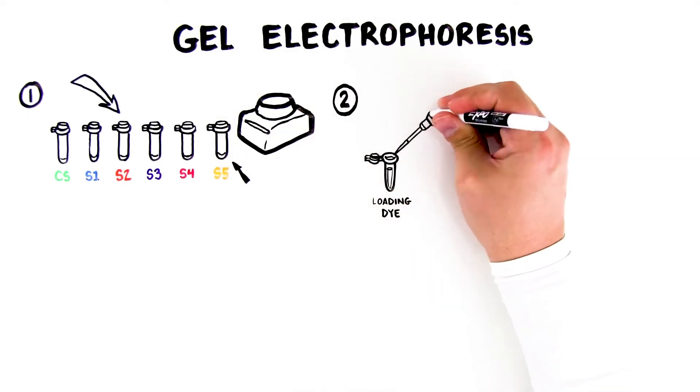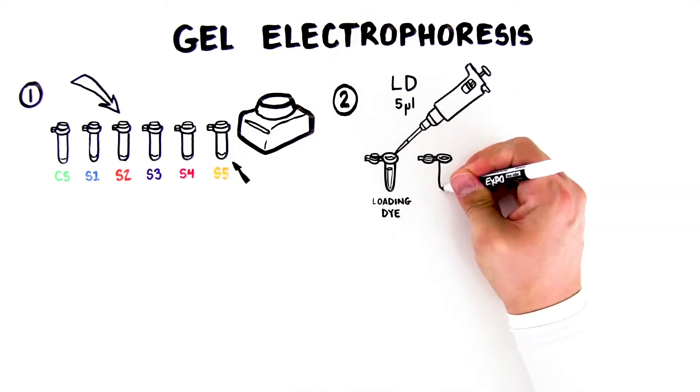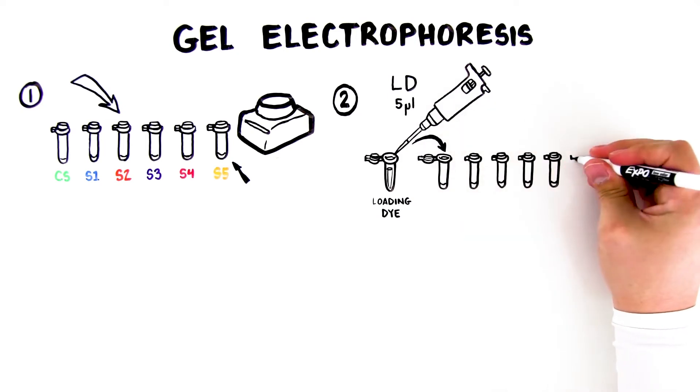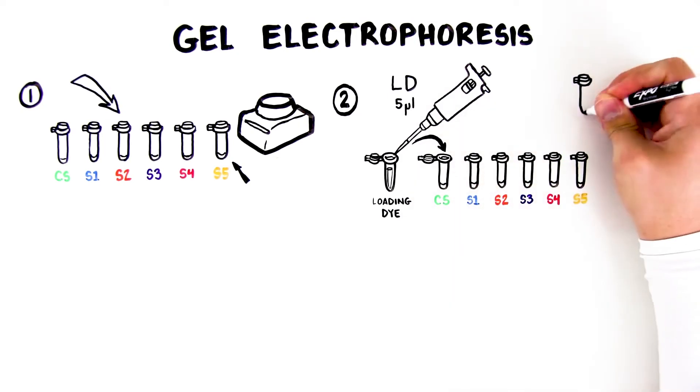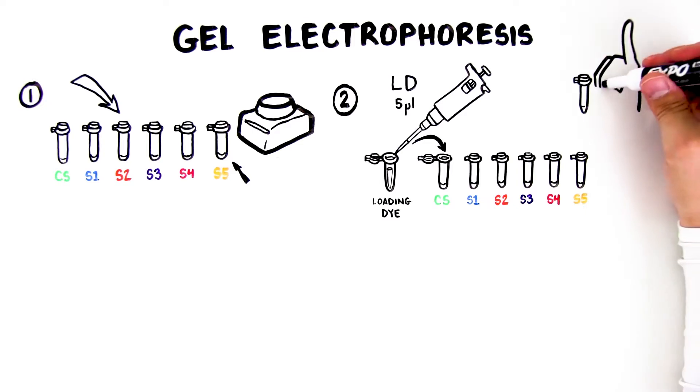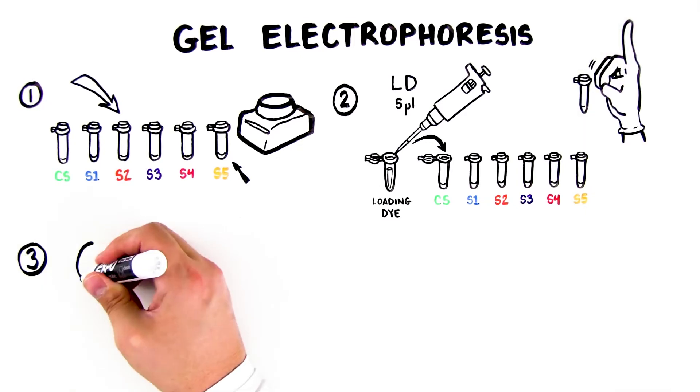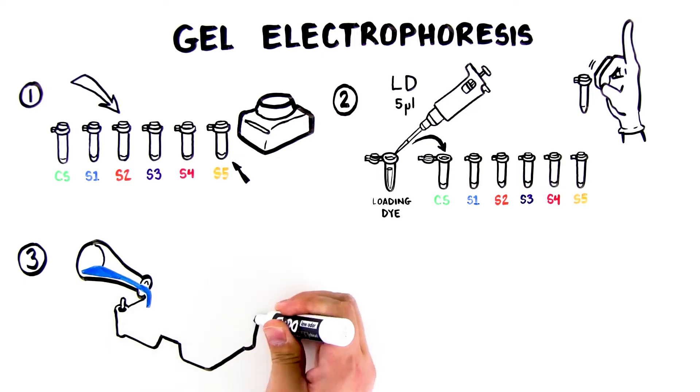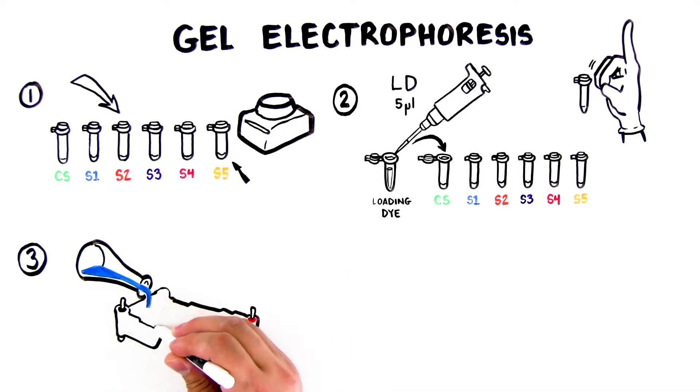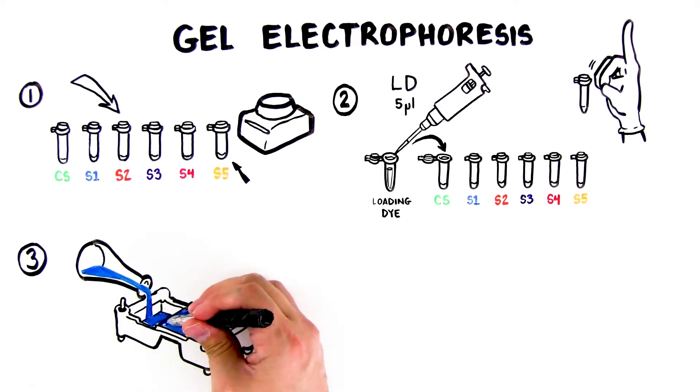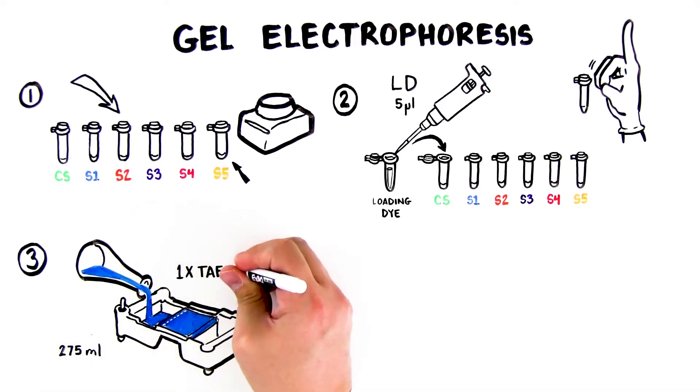Second, using a new tip for each sample, add 5 microliters of loading dye, LD, into each tube. Cap the tubes and mix by gently flicking the tube with your finger. Third, place an agarose gel in the electrophoresis apparatus. Fill the electrophoresis chamber with 1X TAE buffer to cover the gel, using approximately 275 milliliters of buffer.